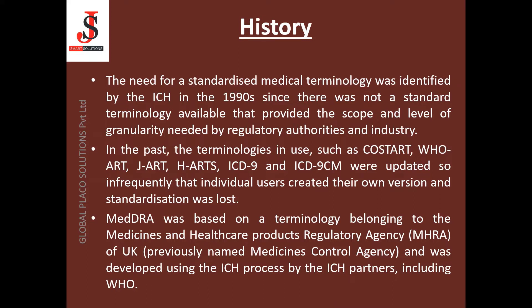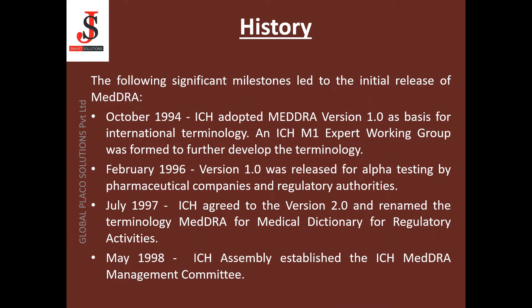MedDRA was based on a terminology belonging to the MHRA of the UK and was developed using the ICH process by the ICH partners including WHO. The following significant milestones led to the initial release of MedDRA. In October 1994, ICH adopted MedDRA version 1.0 as the basis for international terminology, and an ICH M1 expert working group was formed. In February 1996, version 1.0 was released for alpha testing. In July 1997, ICH agreed to version 2.0 and renamed the terminology MedDRA — please note the spelling M-E-D-D-R-A, with two Ds — which stands for Medical Dictionary for Regulatory Activities.